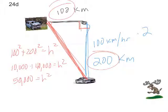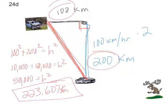And if we take the square root of 50,000, we will get the distance apart. And it looks like they're 223.607 kilometers away from each other. And this connects to common related rates problems in calculus. You'll see this often.